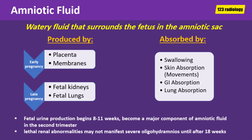Amniotic fluid is a watery fluid that surrounds the fetus in the amniotic sac. It is produced by different ways. Early in pregnancy, it is produced by the placenta and surrounding membranes. Later in pregnancy, most of it comes from fetal kidneys and lungs.